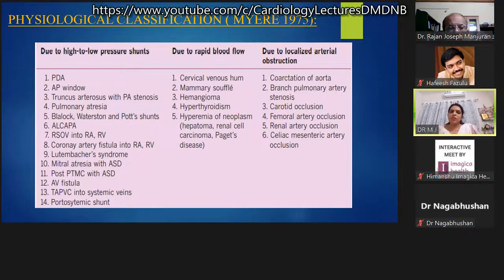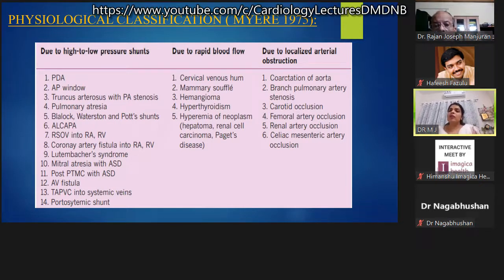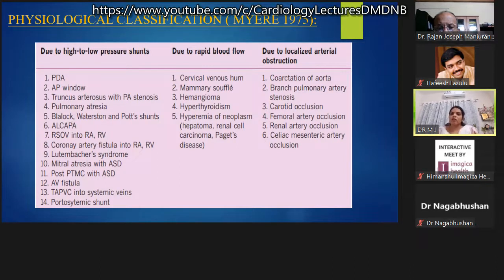Continuous murmurs caused by increased flow include venous hum, mammary souffle, hemangiomas, hyperthyroidism, and hyperemia of neoplasm such as hepatoma. Continuous murmurs due to significant localized arterial obstruction or stenosis include coarctation of aorta, branch pulmonary artery stenosis, significant carotid stenosis, femoral arterial stenosis, and renal or celiac/mesenteric arterial stenosis that is hemodynamically significant.